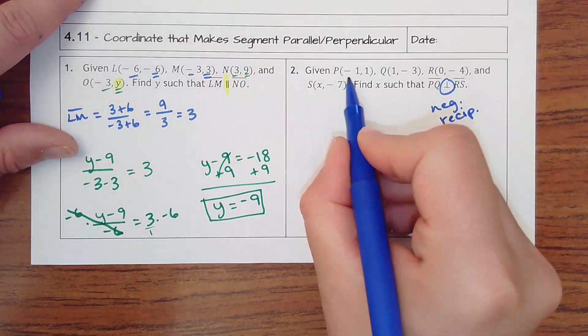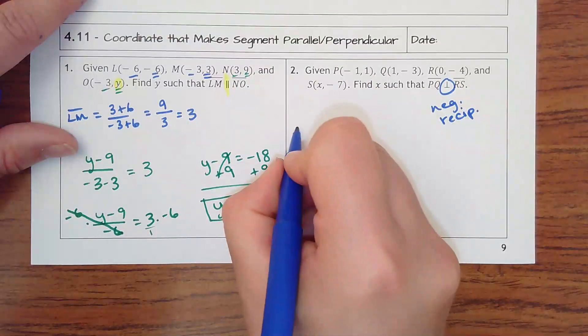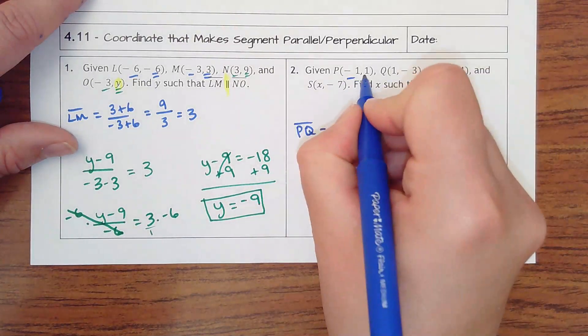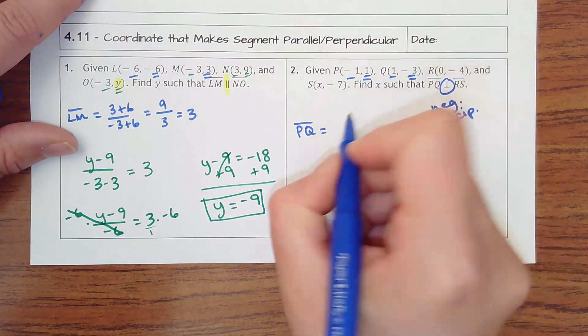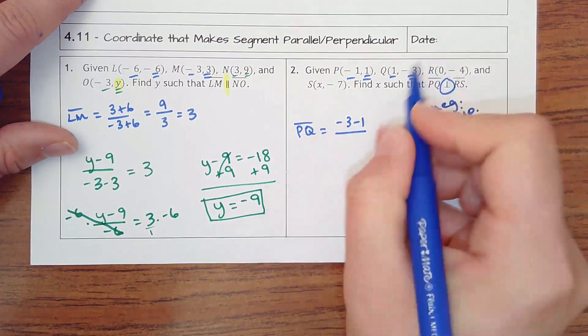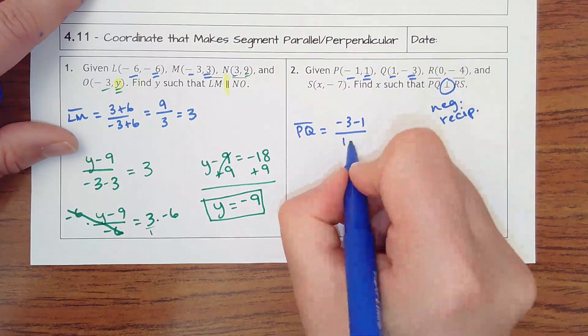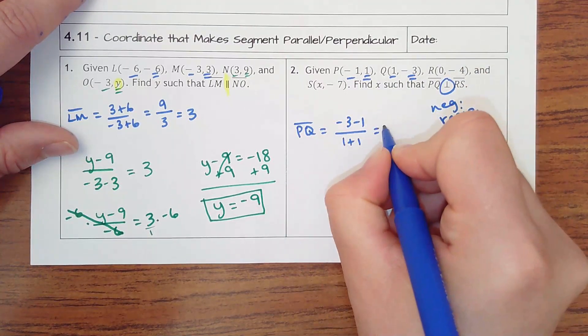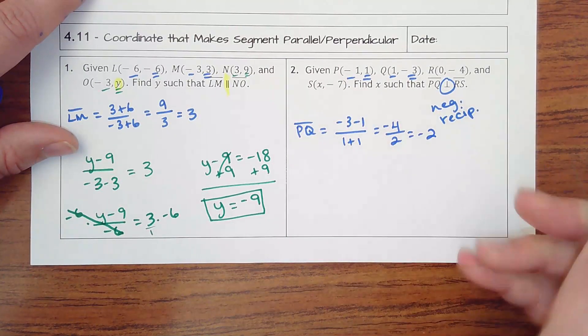Okay, so PQ is what I'm going to find the slope of first. That's going to be negative 3 minus 1 over 1 plus 1 would be negative 4 over 2, which is negative 2.